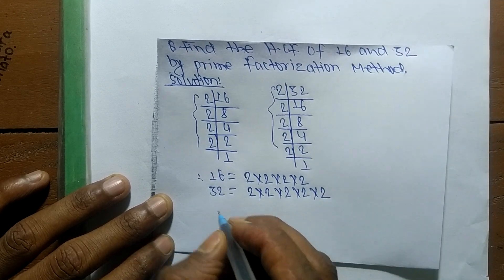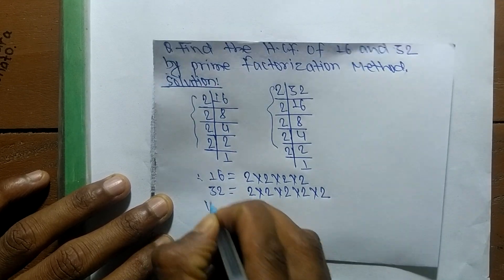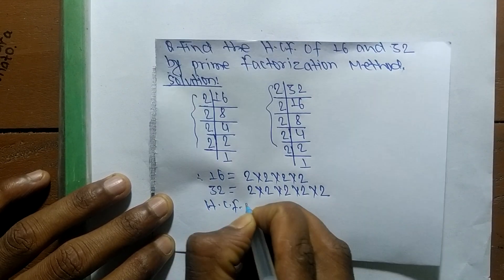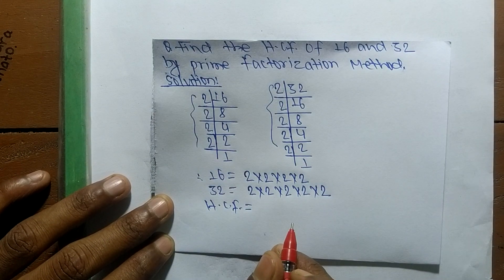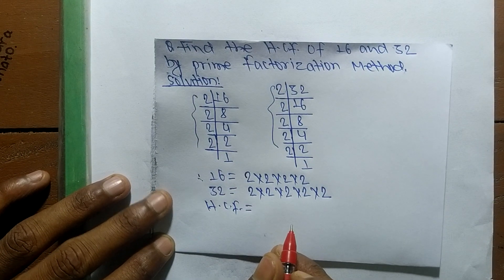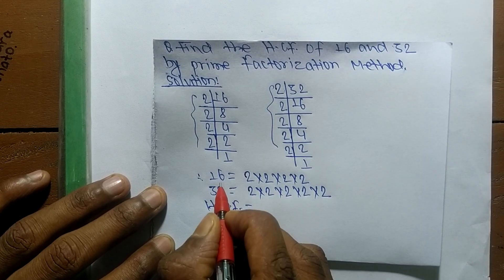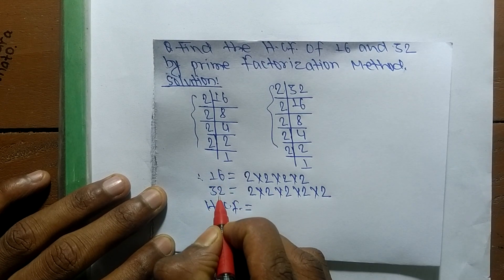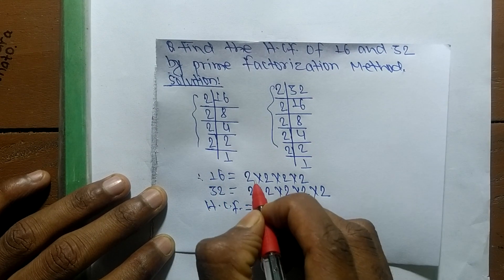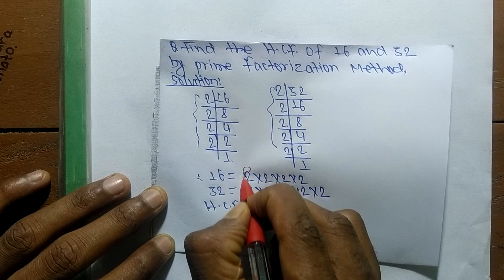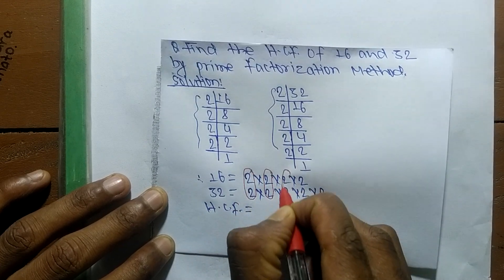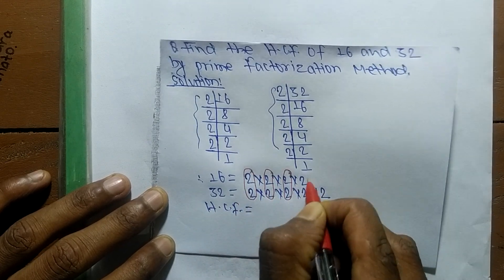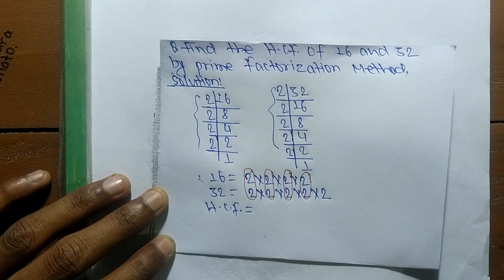To find the HCF, we identify the common factors in the prime factorizations of 16 and 32. The common factors are the first, second, third, and fourth 2s — so there are four common factors of 2.